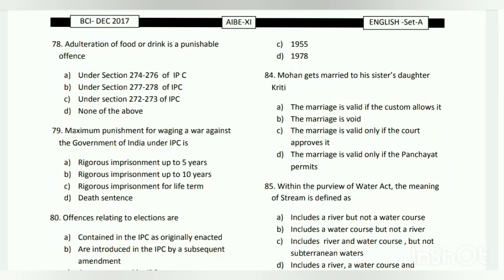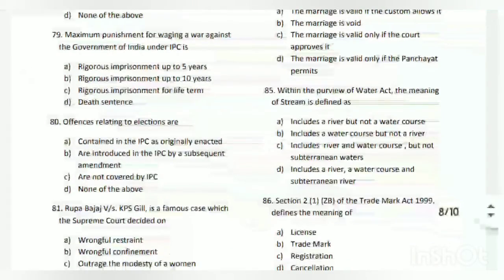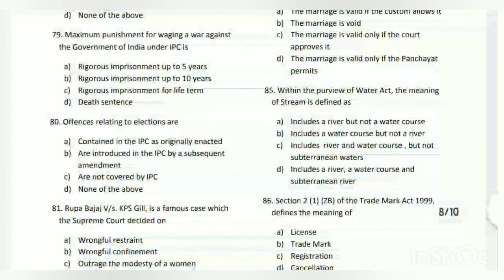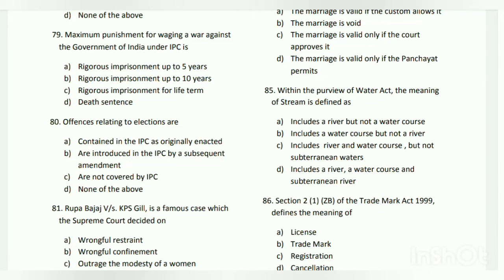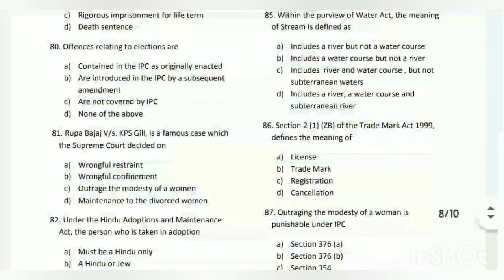The answer is C - under Sections 272 to 273 of IPC. Question number seventy-nine: the maximum punishment for waging a war against the Government of India under IPC is what? The answer is D - death sentence.